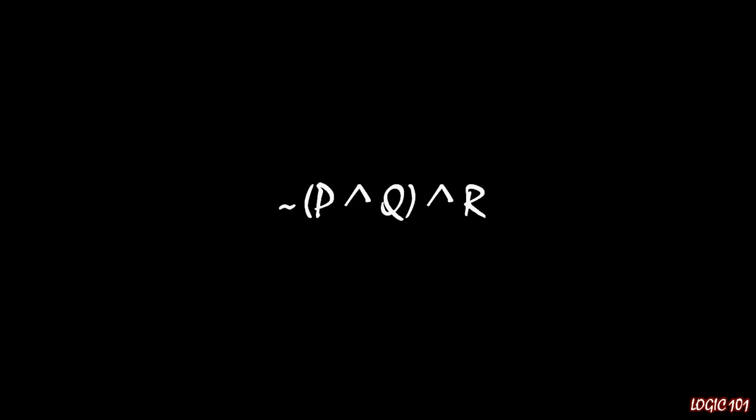Here is a complex logical expression on your screen. We have three simple sentences, and we have three different logical connections. We have a negation and two conjunctions. My question to you is: just by looking at that, can you tell me when that overall logical expression is true based off of when the component parts are true?